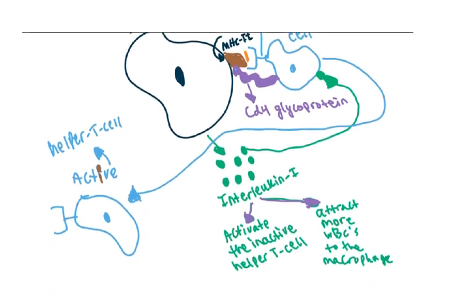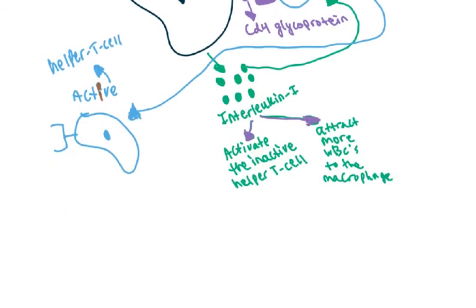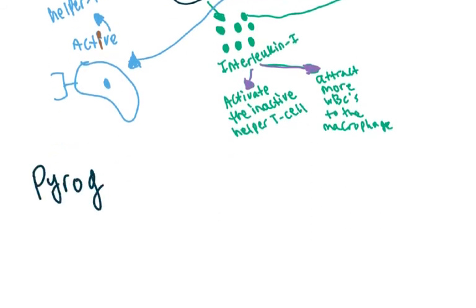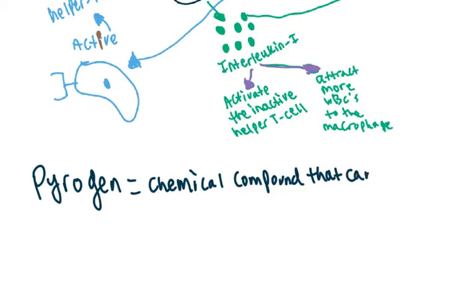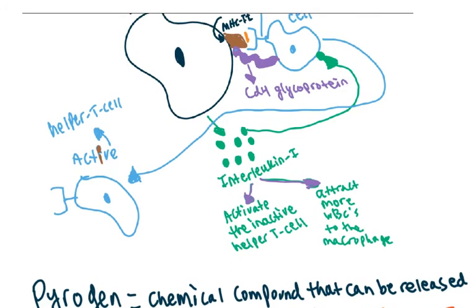So let's define what a pyrogen is. A pyrogen is a chemical compound that can be released by bacteria and even certain types of white blood cells, like macrophages, as we'll see in this example. The pyrogen can lead to fever and increased body temperature, and we'll see how.